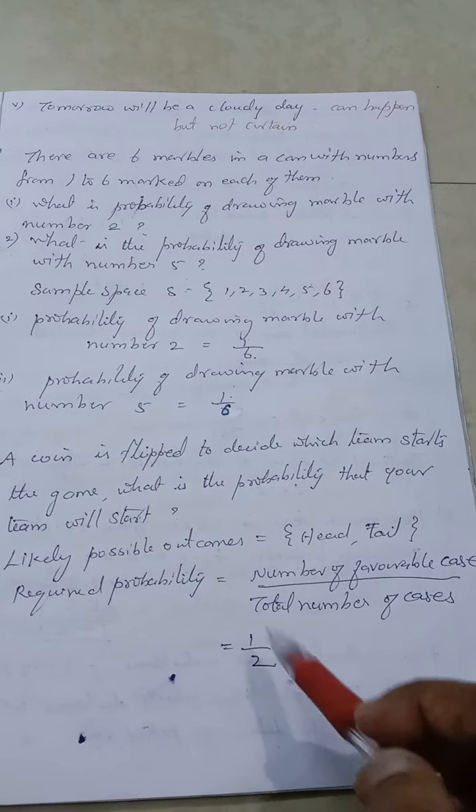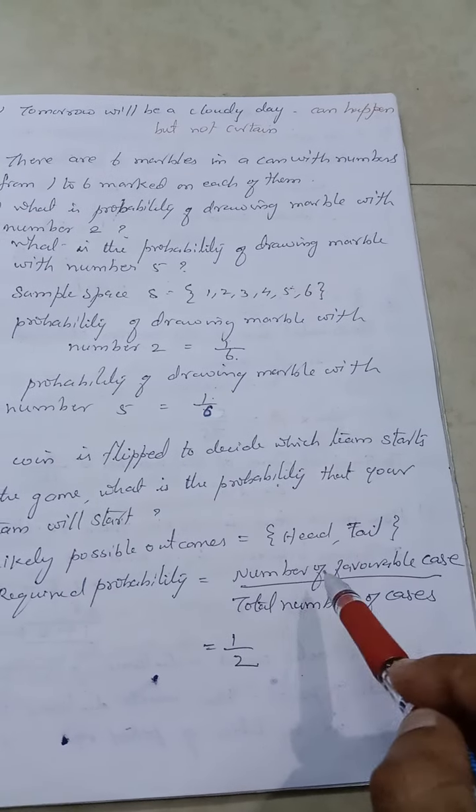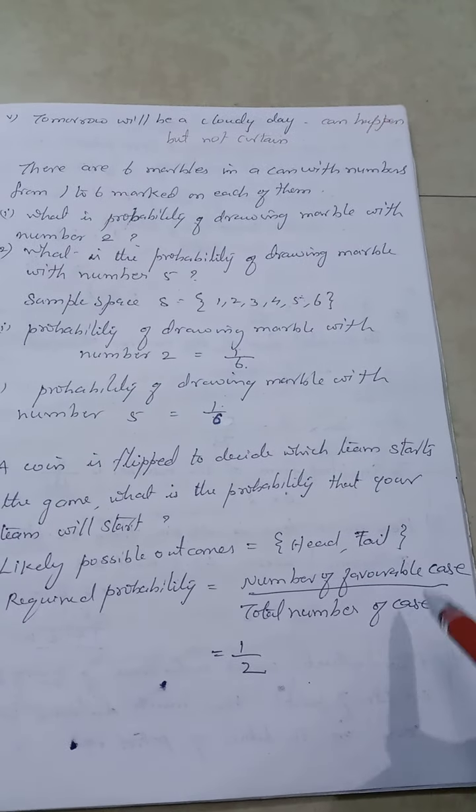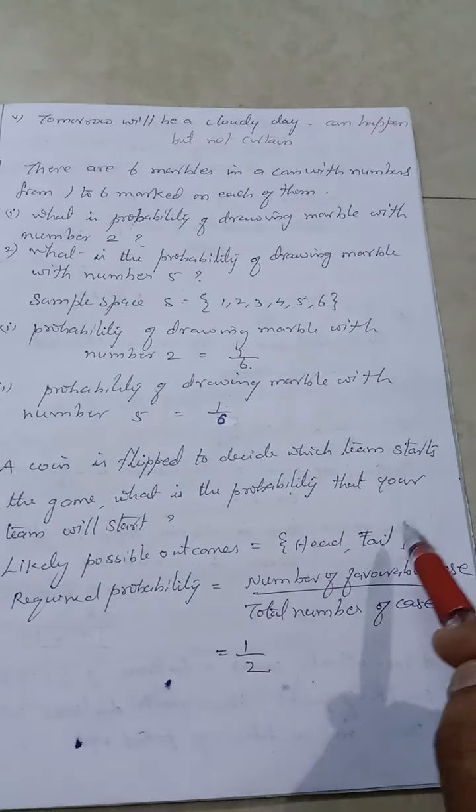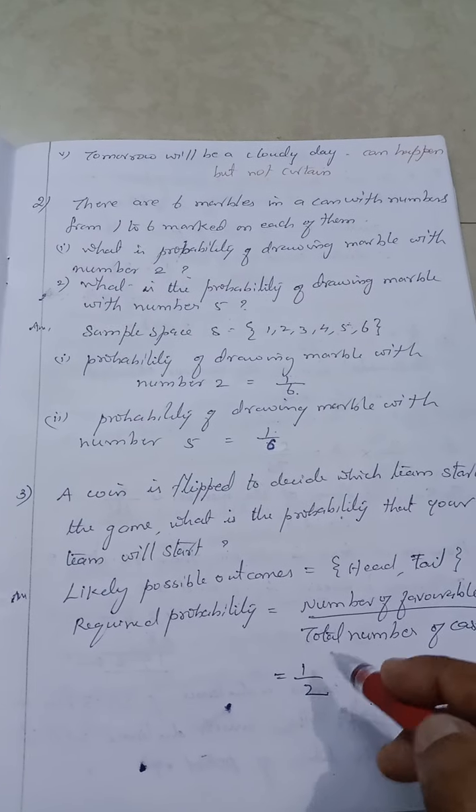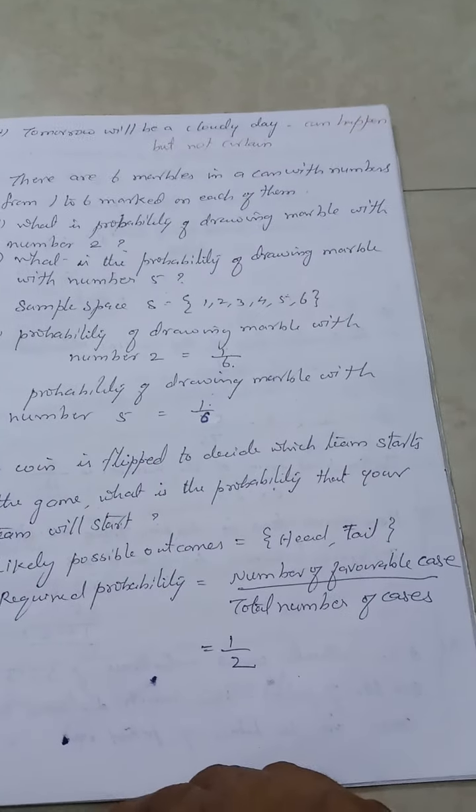When I'm tossing a coin, the chance of getting a head - it has only one head - so the chance is one divided by total number of sides which is two. So my chance is one by two. Please learn this formula: probability is equal to number of favorable outcome divided by total number of cases. Getting a head is one by two, getting a tail is also one by two.